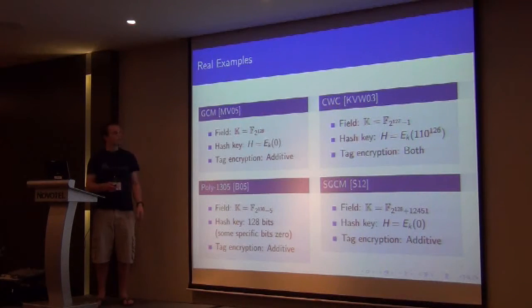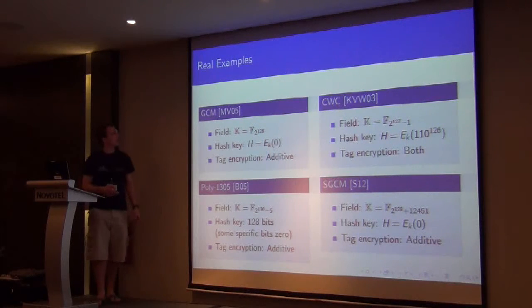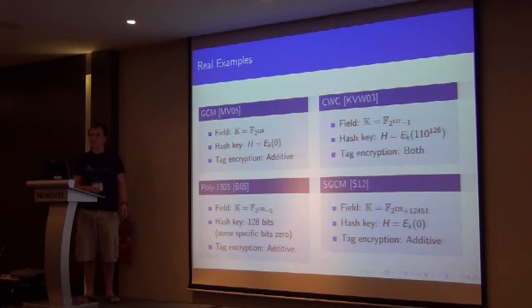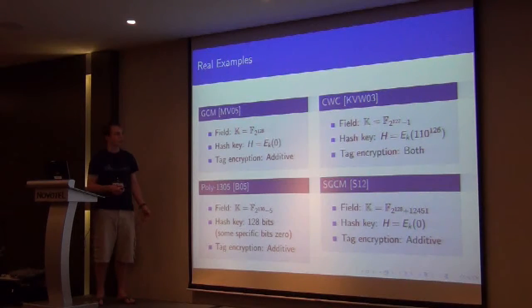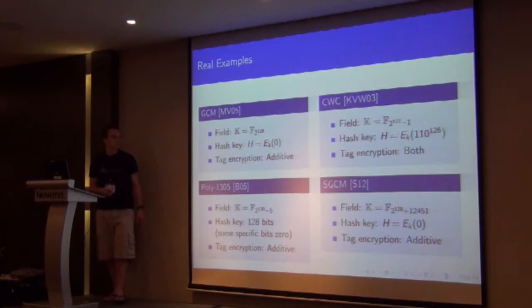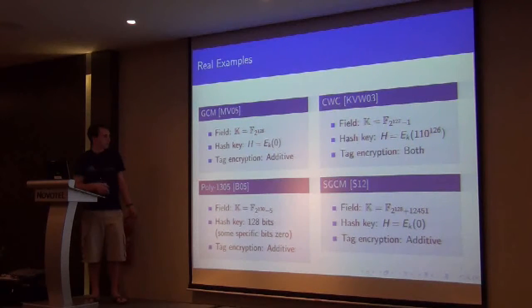So a few real examples. GCM from McGrew and Viega in 2005. So they pick F_2^128 and derive a hash key from the block cipher key, just by encrypting 0. And this is additive encryption and adding that on.